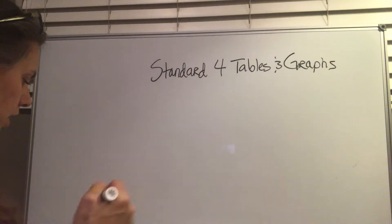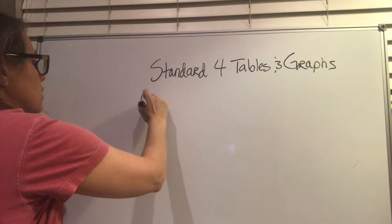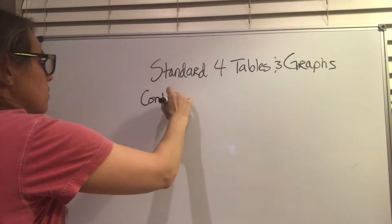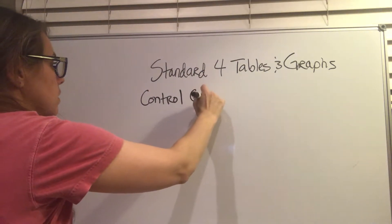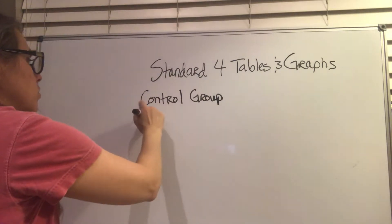Standard four is tables and graphs, and on this one it also includes all those words that we need to understand for experiments, like words such as control group and experimental group.